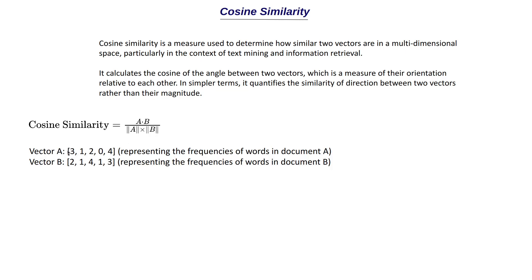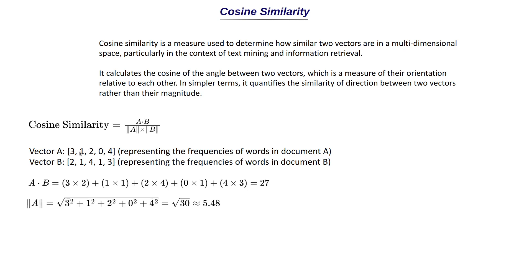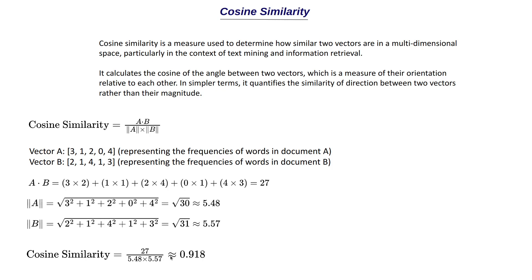For example, say vector a = [3, 1, 2, 0, 4] and vector b = [2, 1, 4, ...], representing word frequencies in two documents (using TF-IDF or count vectorizer). Substituting in the formula: the dot product gives 27. The magnitude of a — square root of (3² + 1² + 2² + 0² + 4²) = √30 ≈ 5.48. The magnitude of b ≈ 5.57. So cosine similarity = 27 / (5.48 × 5.57) = 0.918.